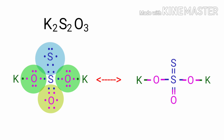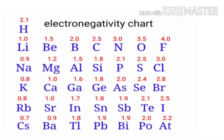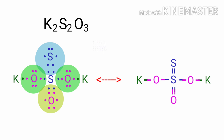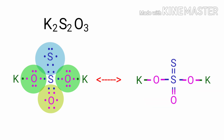Now we can write the oxidation numbers of each element. As per the electronegativity chart, oxygen has more electronegativity than potassium. So in the O-S and S-O bonds, the oxygen atoms take the bonds towards itself. Therefore the oxidation number of potassium is plus 1 and the oxidation number of oxygen is minus 1.